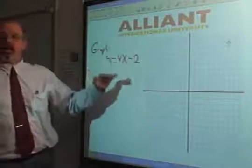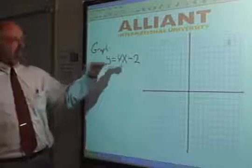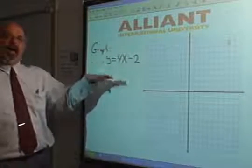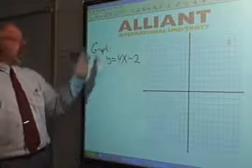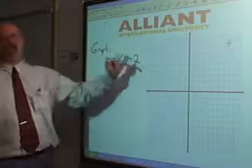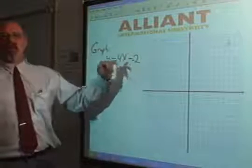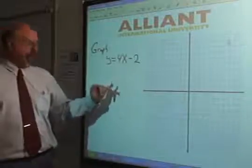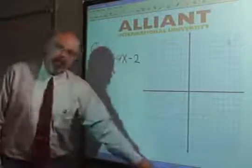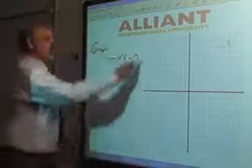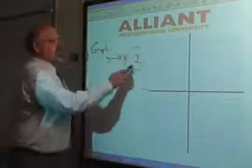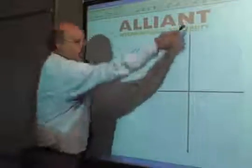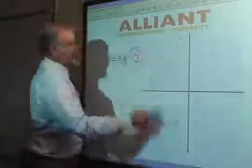There's a shortcut built into the y equals mx plus b formula that tells you how to graph the line. The first point is where it crosses the y-intercept — this is the y-axis.